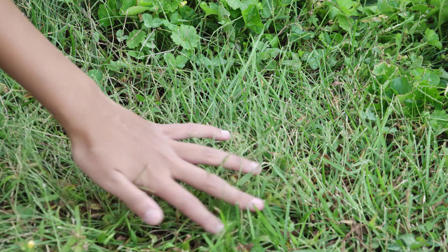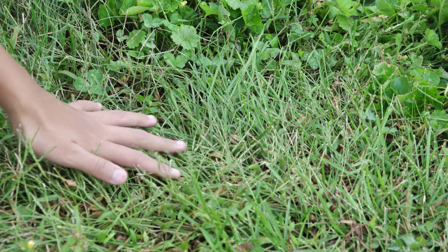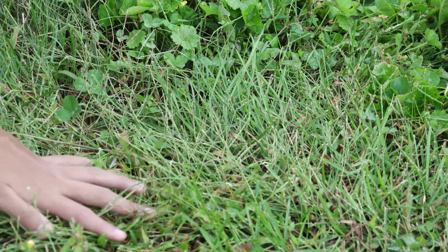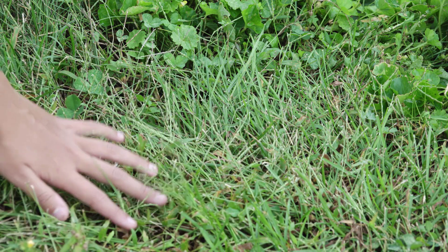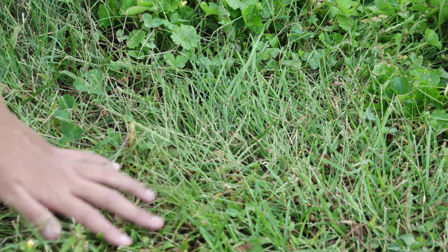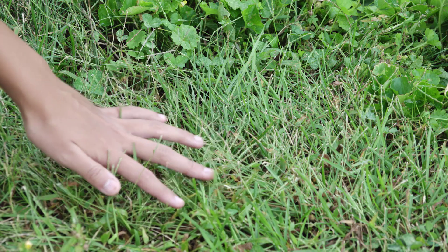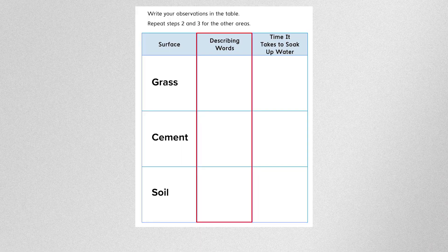What does the grass look like? What is the texture of the grass? What does the temperature of the grass feel like? Explain your observations and record them in the data table. When you've finished recording, select Continue.